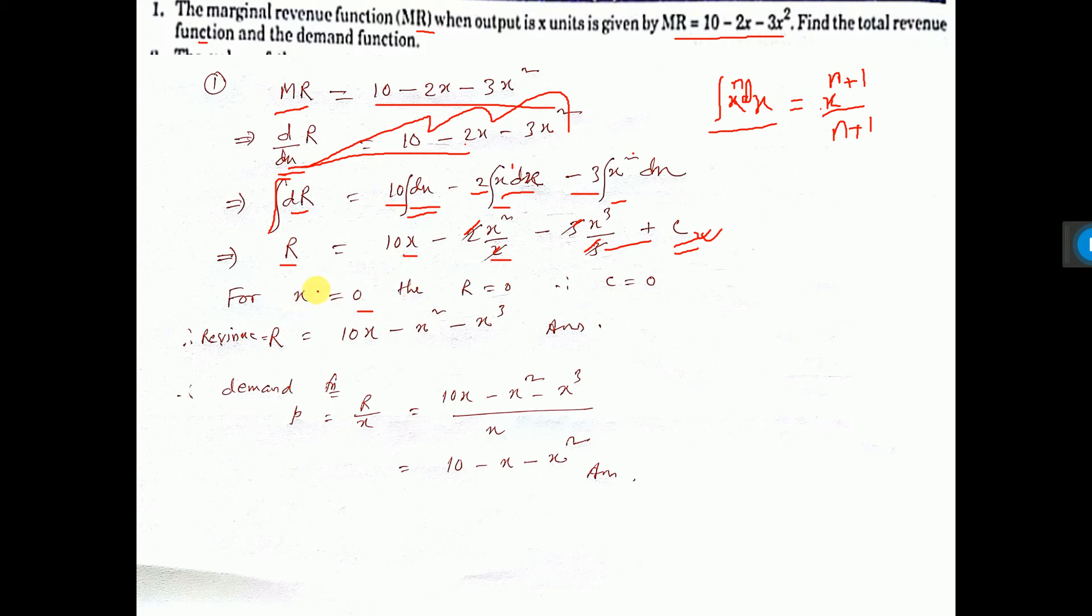Now, for x equal to 0, if you put x equal to 0 - why x equal to 0? Because x is the output x unit, that is x unit sold. If sold x unit, then you will get any revenue, any selling price you will get - no, because 0 unit sold, no selling price you will get.